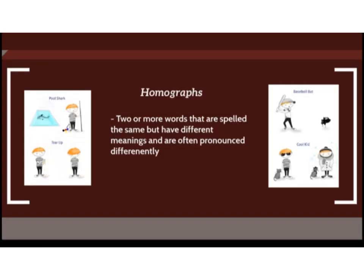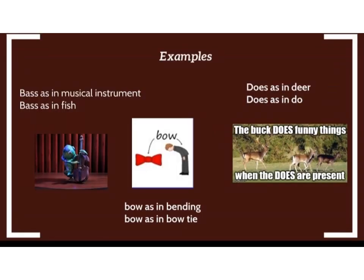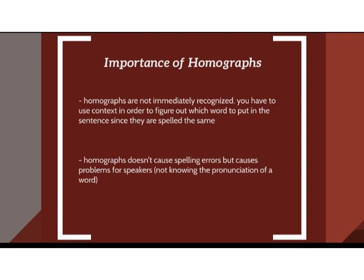The third one is homographs. Homographs are two or more words that are spelled the same but have different meanings and are often pronounced differently. Examples for homographs: first, bass as a musical instrument and bass as in the fish; second, doe as in deer and doe as in dew; third, bow as in bending and bow as in bow-tie. Homographs are not immediately recognized — you have to use context to figure out which meaning applies since they are spelled the same. Homographs do not cause spelling errors but cause problems for speakers not knowing the correct pronunciation of a word.